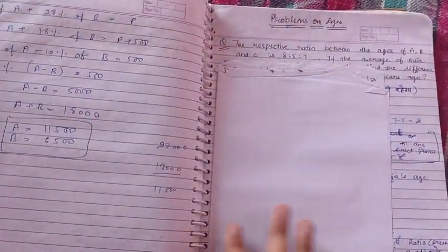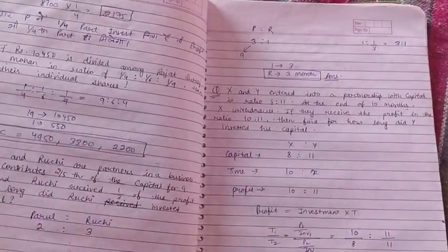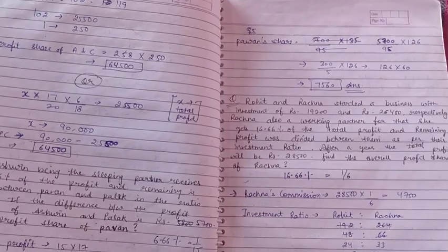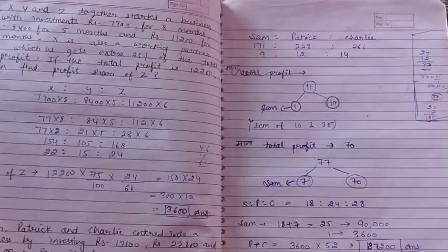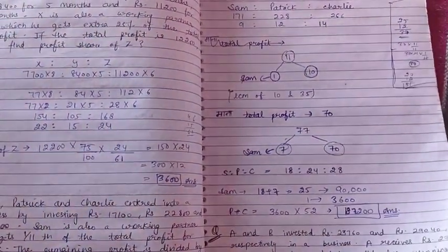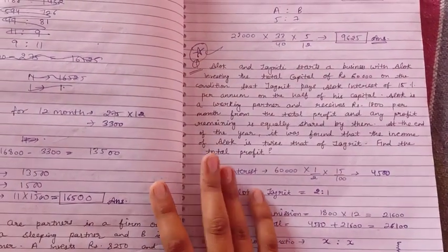As you can see, I have made these notes for all the chapters - mixture and alligation, ages, everything. This is the way to make the notes. If you are making, try to start from level one, after that level two, and after that level three. They will help you very much in revision.